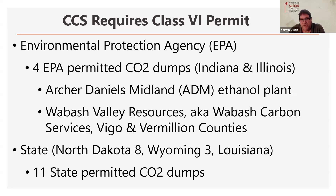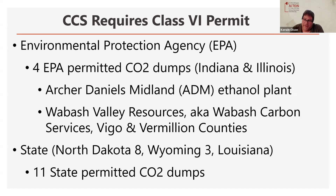As we'll discuss throughout tonight, they have the initial permit to construct. They do not yet have their permit or permission to inject. So there's a long way to go yet for Wabash in terms of their efforts out there in Vigo and Vermillion County. You can also apply as a state to have primacy over the issuance of Class 6 permits, granting the state that authority rather than the EPA. Currently three states have primacy for those Class 6 permits: North Dakota, Wyoming, and Louisiana. I believe West Virginia, Texas, and Arizona have pending applications. Under those primacy permits, 11 Class 6 permits have been issued — eight in North Dakota and three in Wyoming to date.